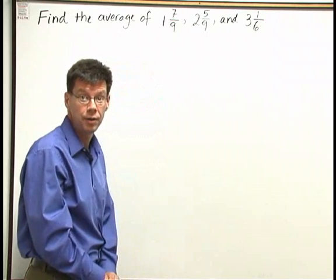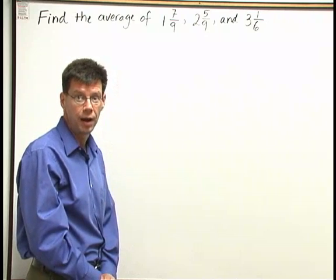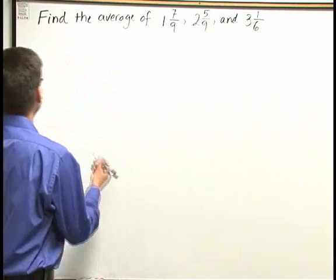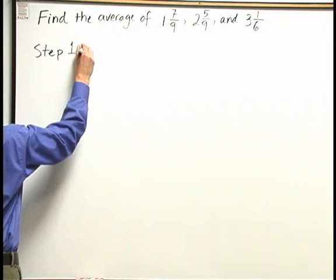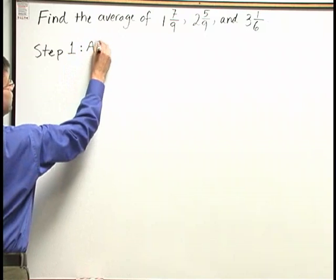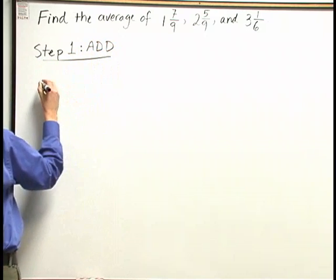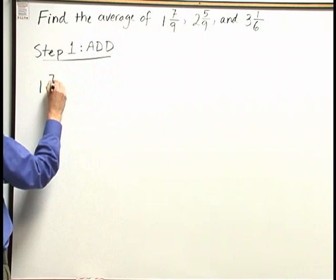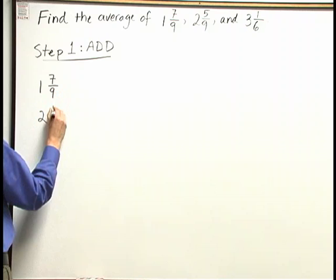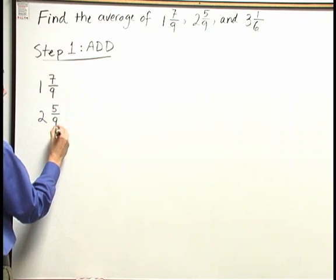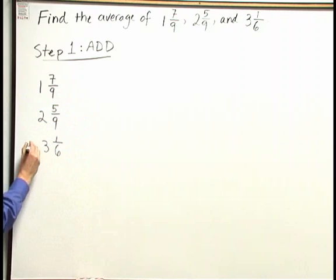We need to go through the calculation. Now calculating an average is a two-step process. First, in step one, we need to add the fractions, add the numbers together. So I'm going to take one and seven-ninths, two and five-ninths, and three and one-sixths, and add them.